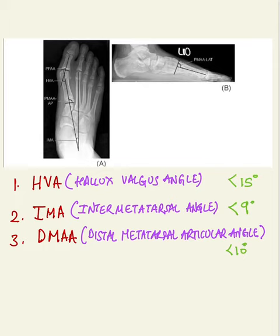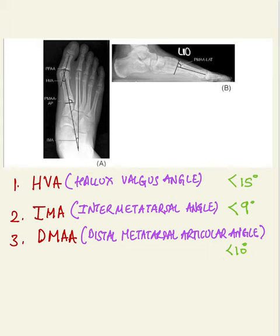The third angle is the distal metatarsal articular angle, which is the angle subtended between the long axis of the first metatarsal and the line perpendicular to the articular surface of the first metatarsal, which is normally 10 degrees. The significance of these angles is to plan corrective surgeries of hallux valgus deformity.